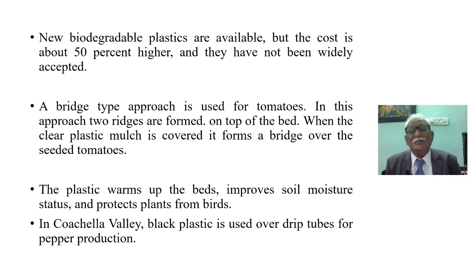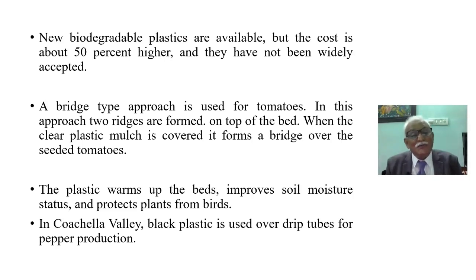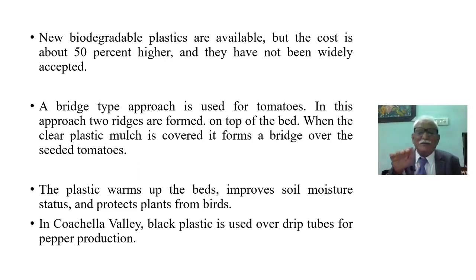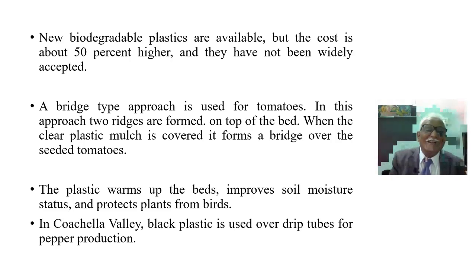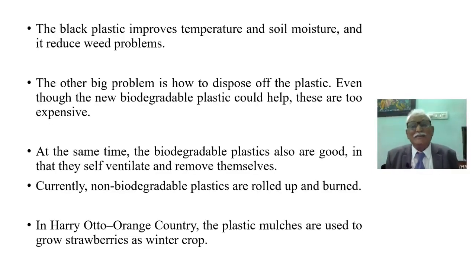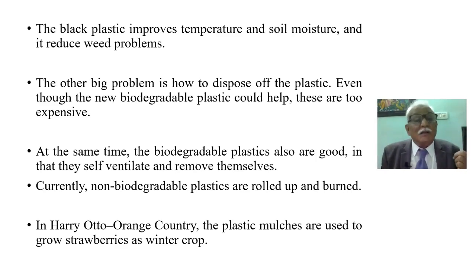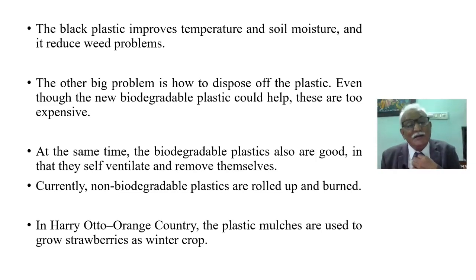There is no way to cultivate weeds under plastic, so new herbicides are being investigated. Biodegradable plastics are available but cost about 50 percent higher and have not been widely accepted. A bridge-type approach is used for tomatoes, where clear plastic forms a bridge over the seeded tomatoes, warms the beds, improves soil moisture status, and protects plants. Biodegradable plastics self-ventilate and remove themselves, while non-biodegradable plastics are currently rolled up and burned.